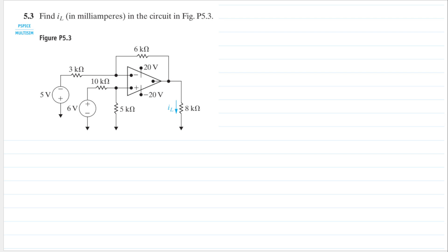Hello, my name is RD and we are going to solve problem 5.3 from the Nilsson and Riedel book. The question is: find iL in milliamperes in the circuit in figure P5.3. We have an op-amp. Let's name the node before the op-amp as node A and this node here as node B. Remember that the inputs of the op-amp have the same voltage, so vA is equal to vB.